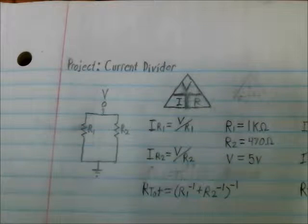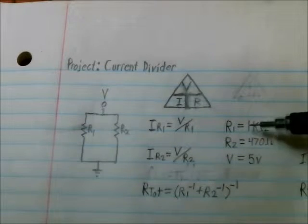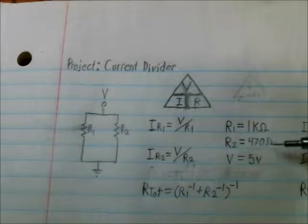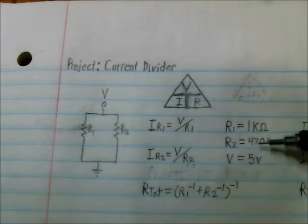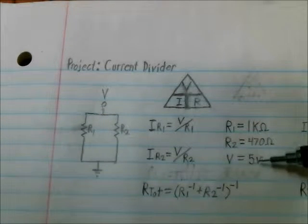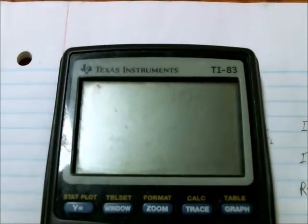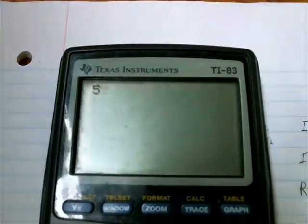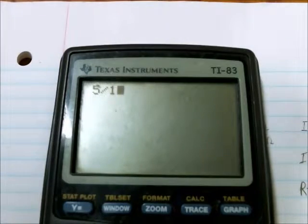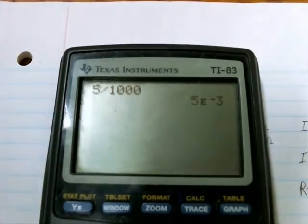And let's give those some values. So R1 is 1k, R2 is 470, and the voltage is 5 volts. So using those values, 5 divided by 1000. So the current through R1 is 5 milliamps.